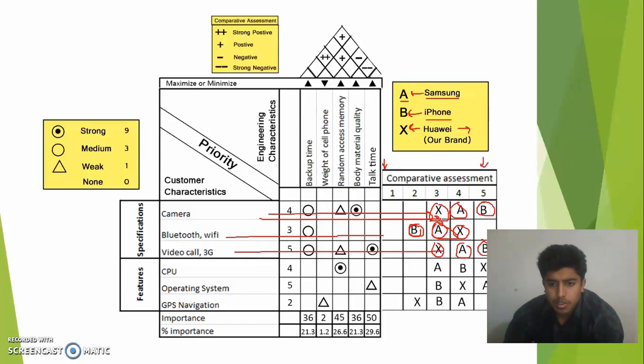And the reason for doing this is to find a trend. We all know that if we have all our characteristics there, for example, if they're all X, we would know that we are the best in the market.